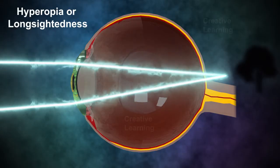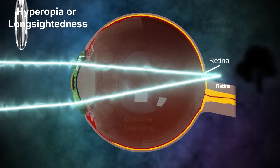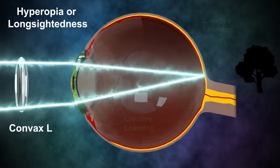Hyperopia or long-sightedness occurs when the eye focuses the image behind the retina. Hyperopia can be corrected by a convex lens.